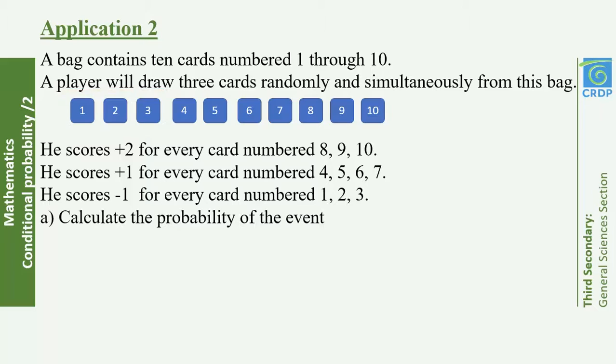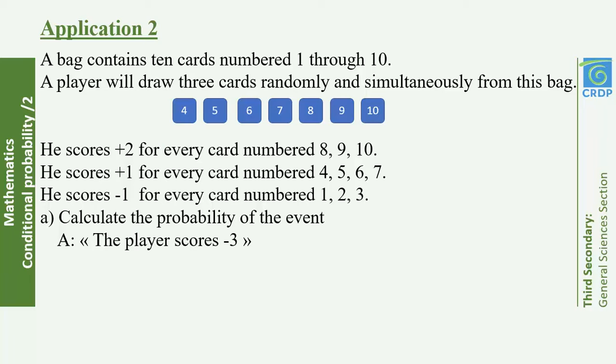Part A: Calculate the probability of event A — the player scores −3. The only way to score −3 is to draw cards 1, 2, and 3, each worth −1. So the favorable outcomes are C(3,3) (only one way to choose all three), divided by the total number of outcomes C(3,10).